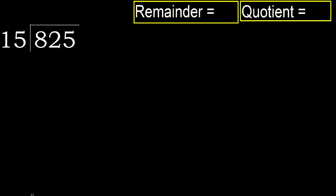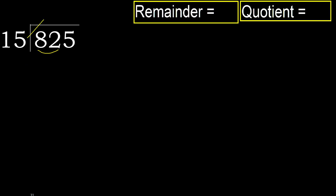825 divided by 15. 8 is less, therefore next. 82 is not less, therefore we work with 82. 15 multiplied by which number is nearest to 82, but not greater?